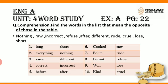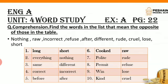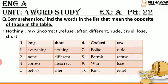Next is English A paper exercises, page number 22, word study and comprehension. Find the words in the list that mean the opposite of those in the table. The table gives words: long, everything, same, correct, before, cooked, polite, permit, win, kind. The words given above the table are: nothing, raw, incorrect, refuse, after, different, rude, cruel, loose, short. You have to pick the words from the list and put the opposite word in the table. For example: long — short, everything — nothing, same — different, correct — incorrect, before — after. Similarly all of them are done.